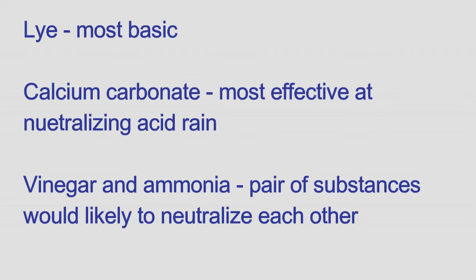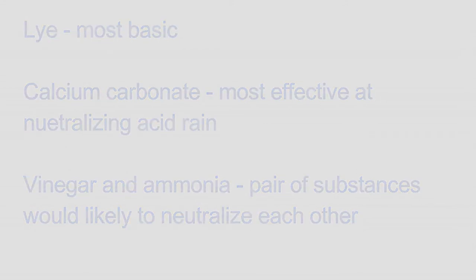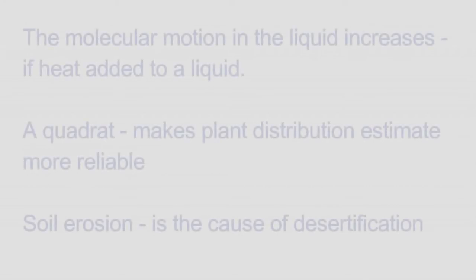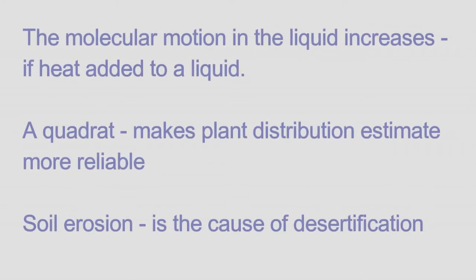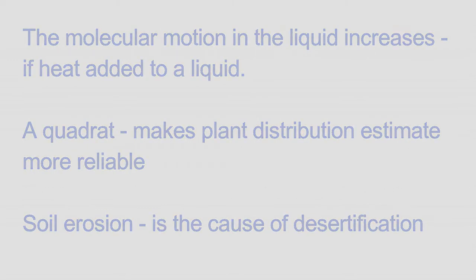Vinegar and ammonia are the pair of substances that would likely neutralize each other. The molecular motion in a liquid increases if heat is added to a liquid. A quadrat makes plant distribution estimates more reliable. Soil erosion is the cause of desertification.